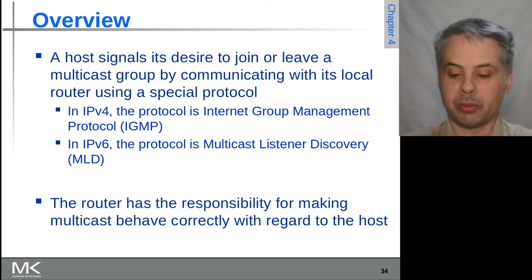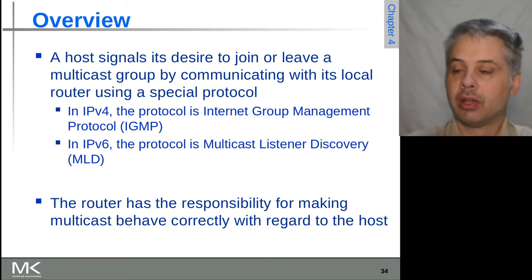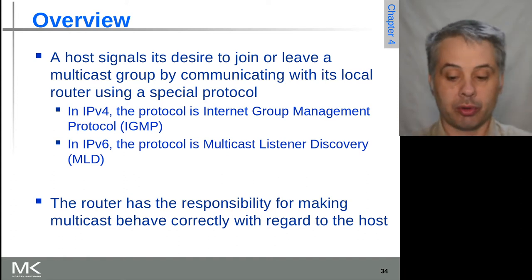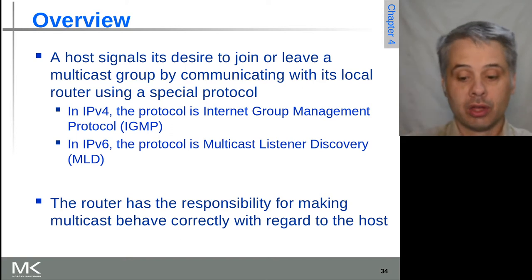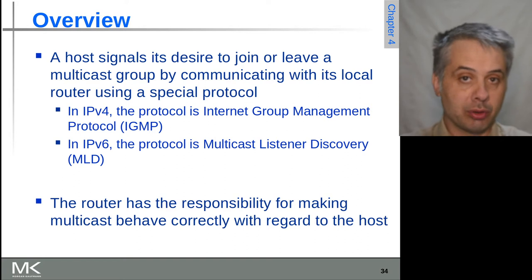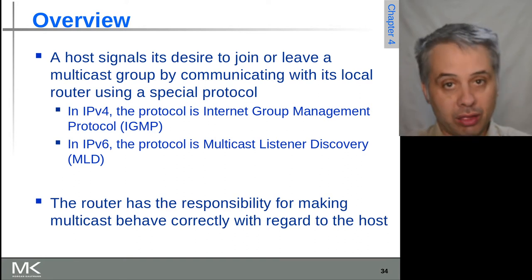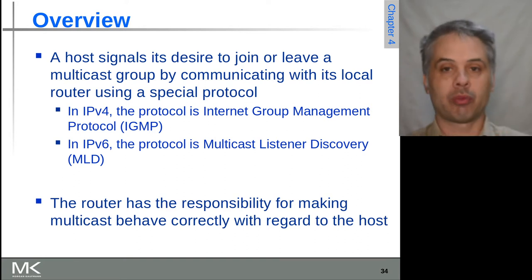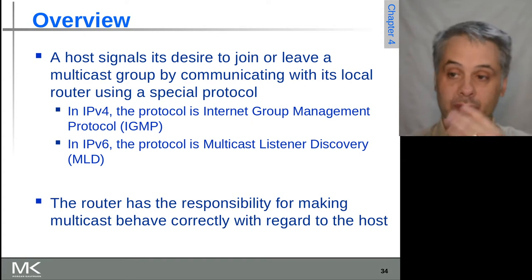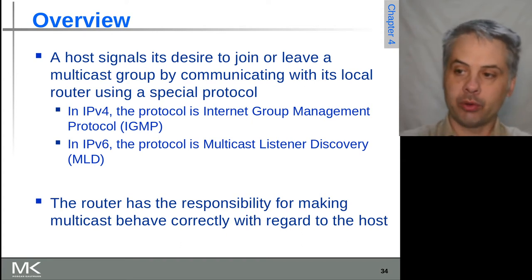Back to multicast. When a host wants to join a multicast group, it communicates with its local router to say it wants to join, because the local router needs to know if any of its connected devices are in a multicast group, so that it can in turn tell its upstream routers the same information and start the flow coming through. In IPv4, this is Internet Group Management Protocol, IGMP.